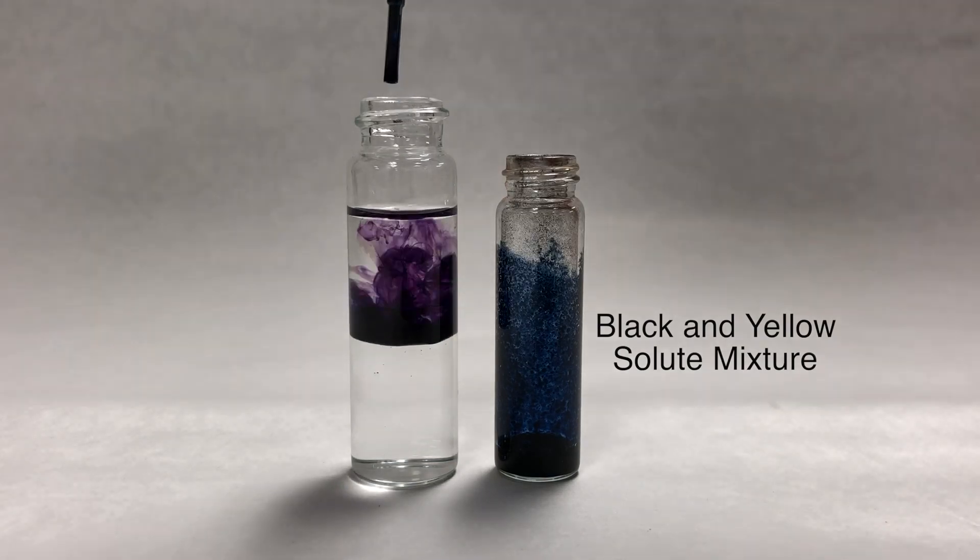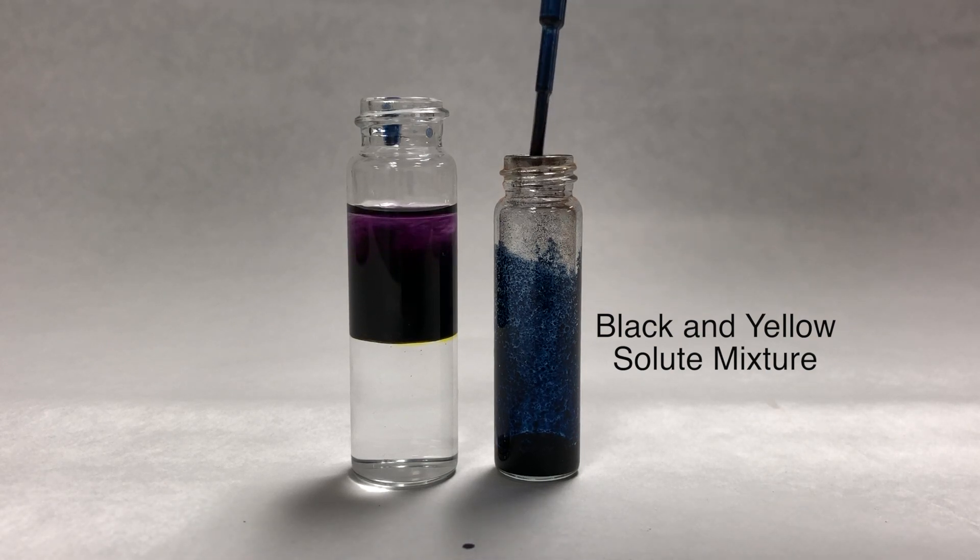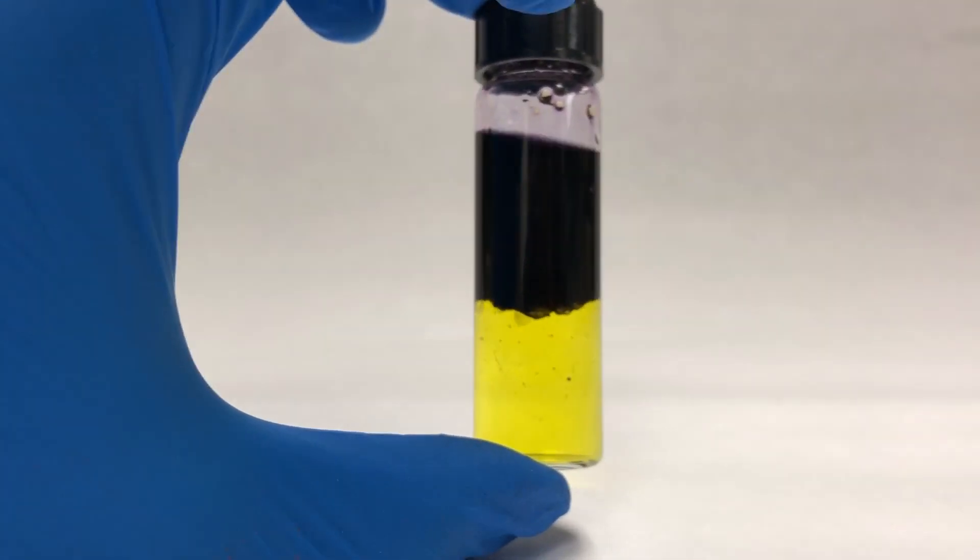Now, if we are given a liquid mixture of the black and yellow solutes, we can actually separate them by adding them to this same solvent mixture. After adding the mixed substances, we will have to shake the vial a little bit to get them to separate.